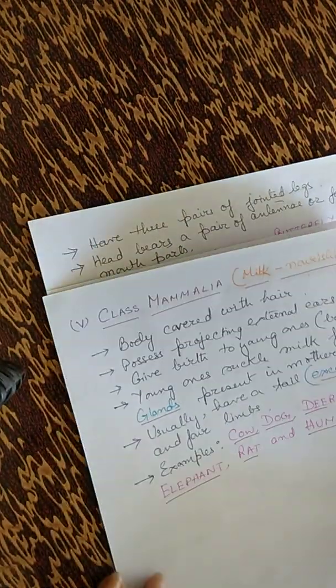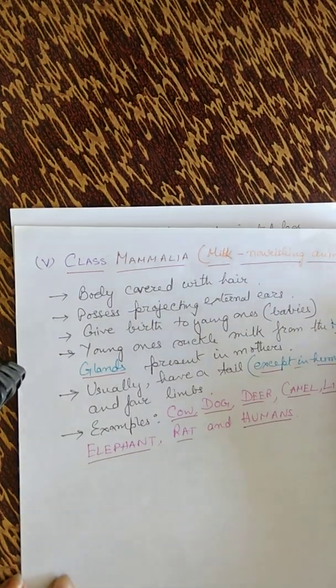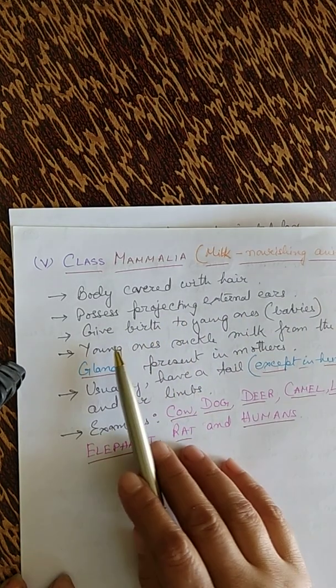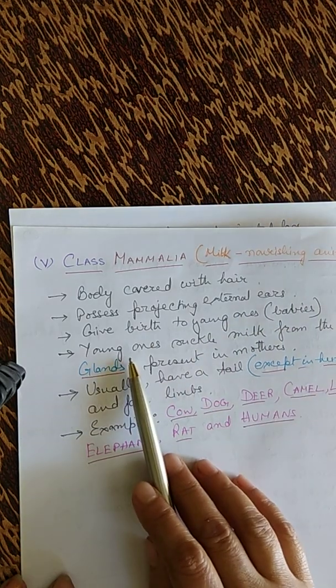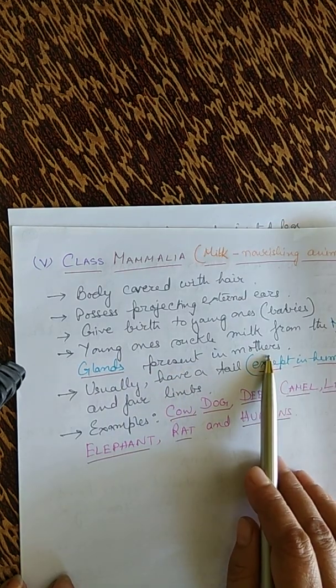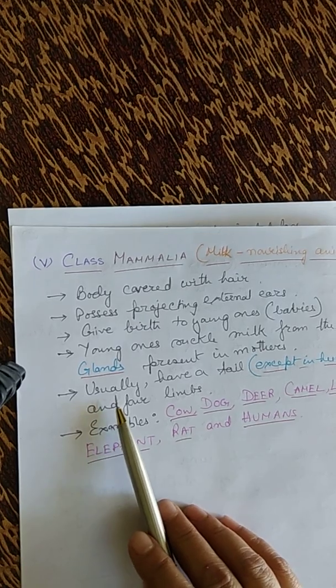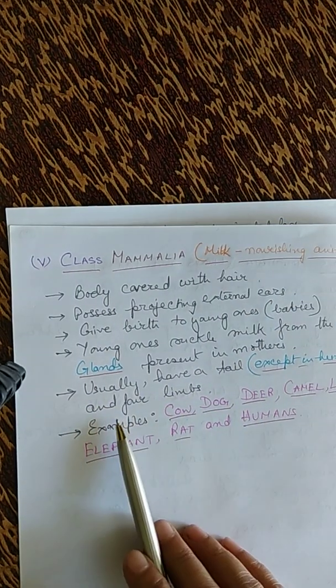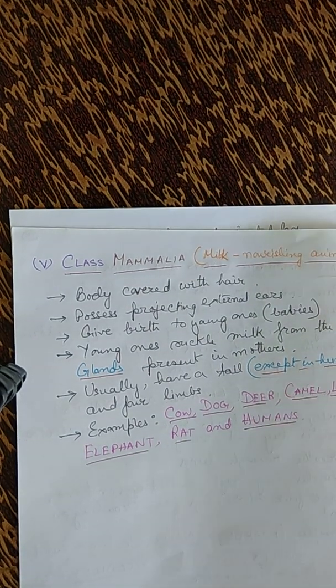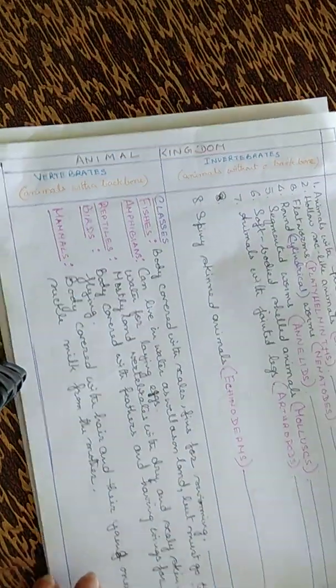The last class is Mammalia, the milk-nourishing animals. Their body is covered with hair. They possess projecting external ears, give birth to young ones, and the young ones suckle milk from mammary glands in the mothers — hence the name Mammalia. They usually have a tail (except in humans) and four limbs. Examples: cow, dog, deer, camel, lion, tiger, elephant, rat, and humans.